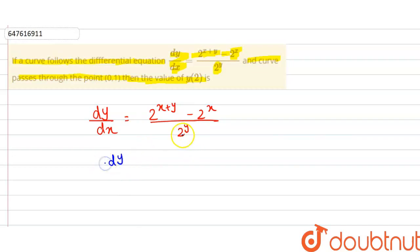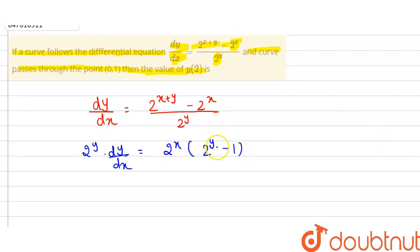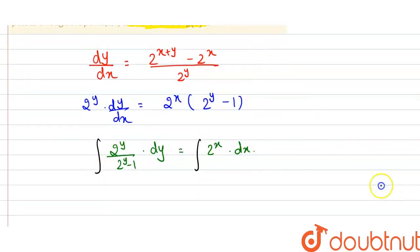We bring dy multiplied by 2 raised to the power y to this side. On the right side we have 2 raised to the power x. So we get 2 raised to the power y, and 2 raised to the power y upon 2 raised to the power y minus 1 into dy is equal to 2 raised to the power x into dx. Now we integrate both sides.